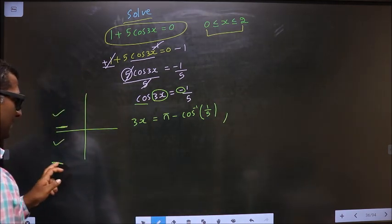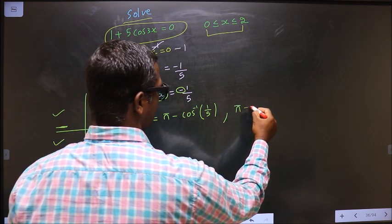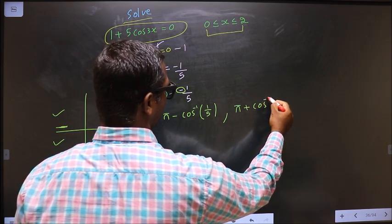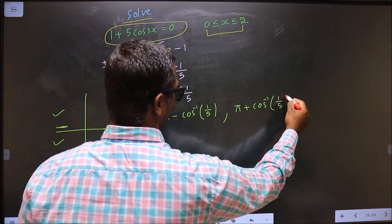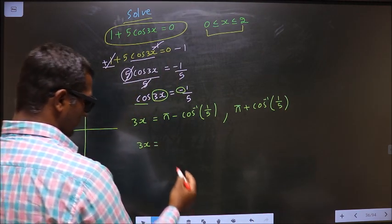To get an angle in the third quadrant, we should do π plus cos inverse 1 by 5.